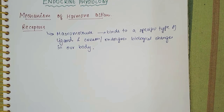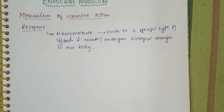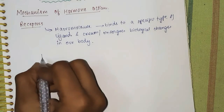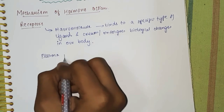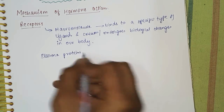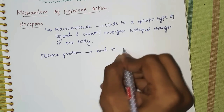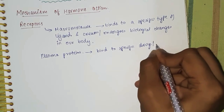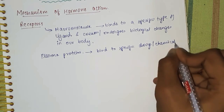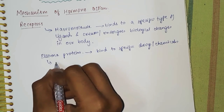One more thing to keep in mind: many drugs and chemicals also bind to plasma proteins of the cell membrane, but we cannot classify them as receptors because they don't undergo any kind of biological changes in our body. So plasma proteins are not considered as receptors — they bind to specific drugs or chemicals but are not considered as receptors.